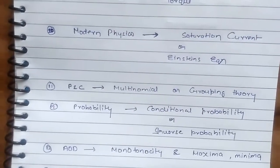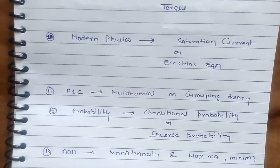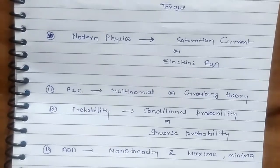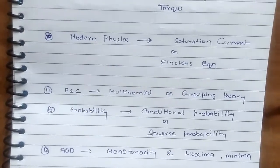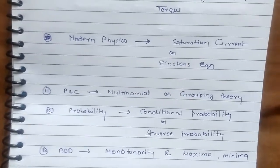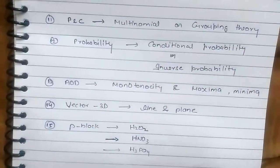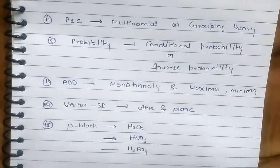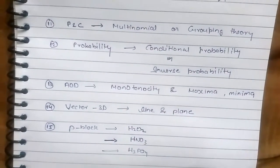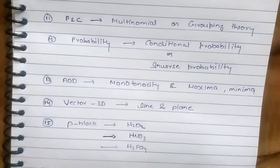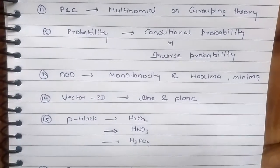PNC: multinomial theorem or grouping theory. Probability: conditional probability or inverse probability. Application of derivative: monotonicity and maxima and minima. Vector 3D, line and plane.